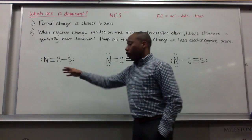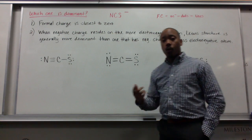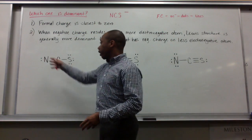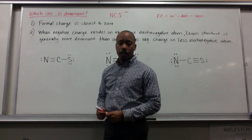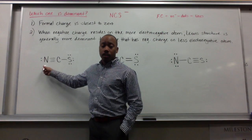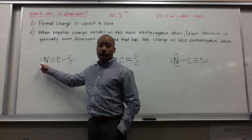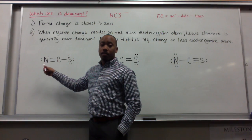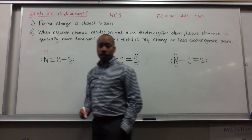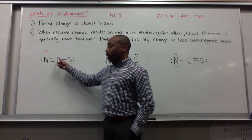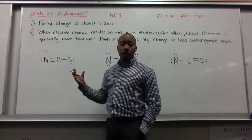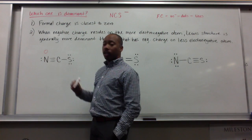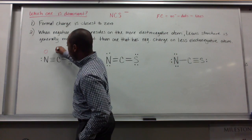Let's assign formal charges for all these structures. Our equation is: valence electrons minus the dots minus the lines. For the first structure, nitrogen has five valence electrons. Five minus two dots, minus three lines, gives us five minus two minus three, which is zero. Carbon has four valence electrons minus zero non-bonding electrons, which is four, minus four lines touching carbon — so four minus four, also giving zero.